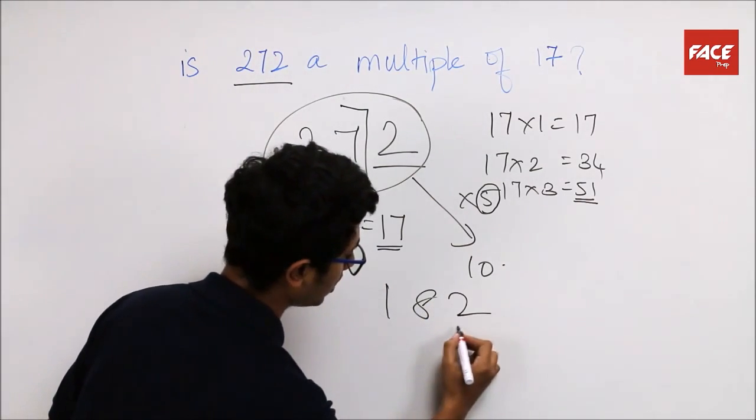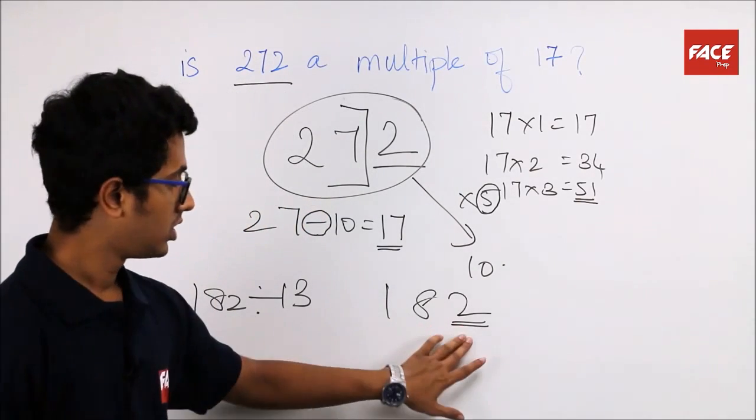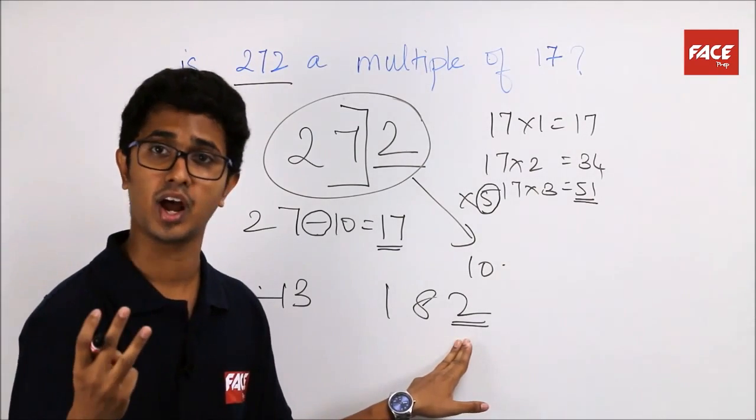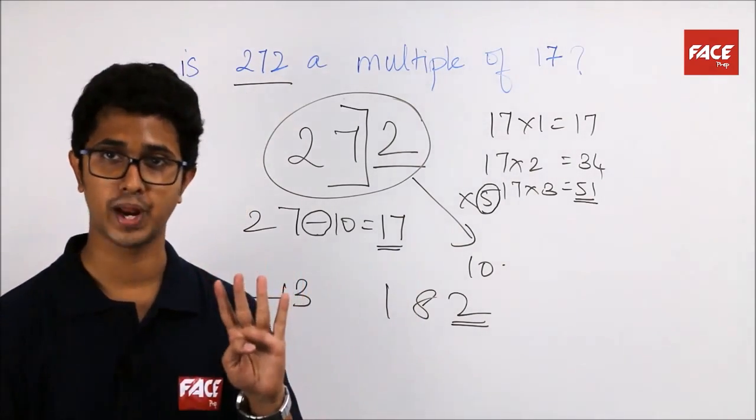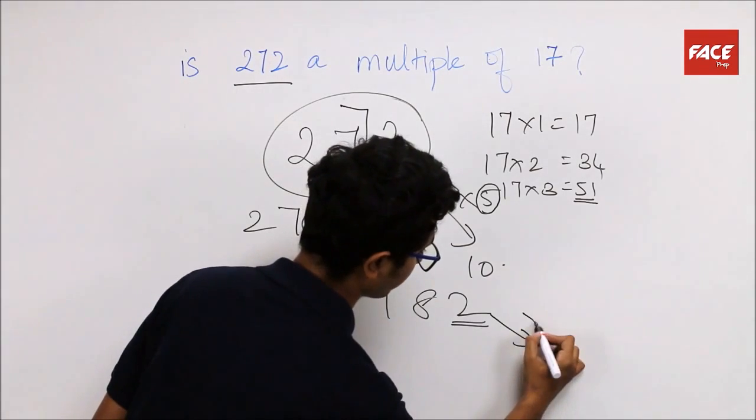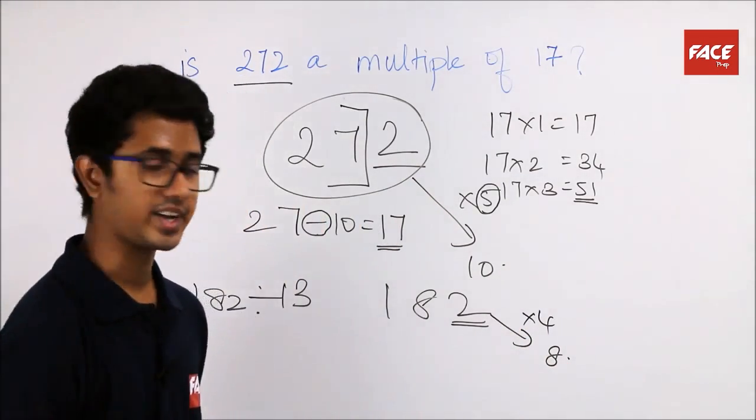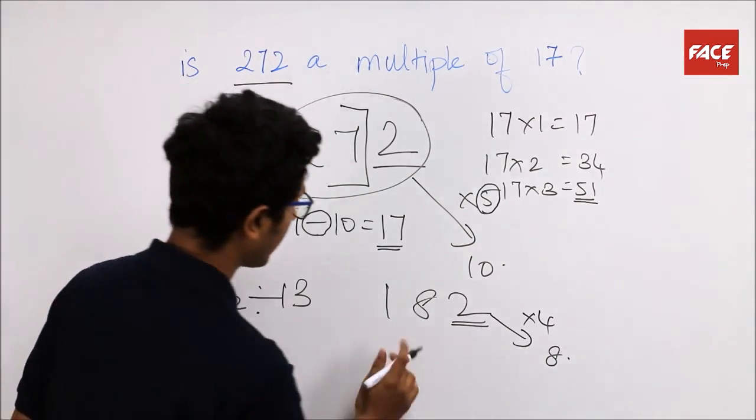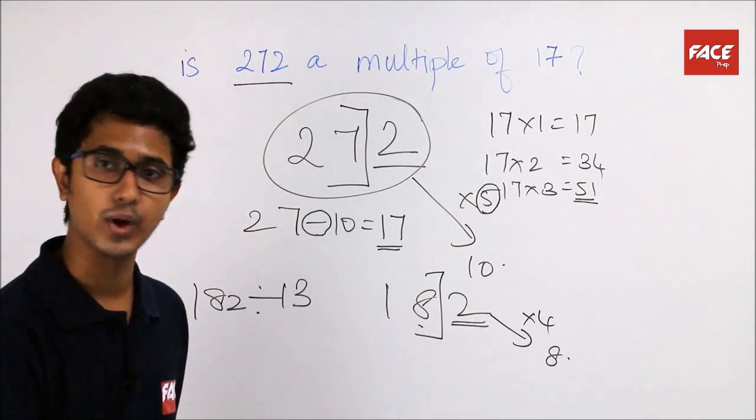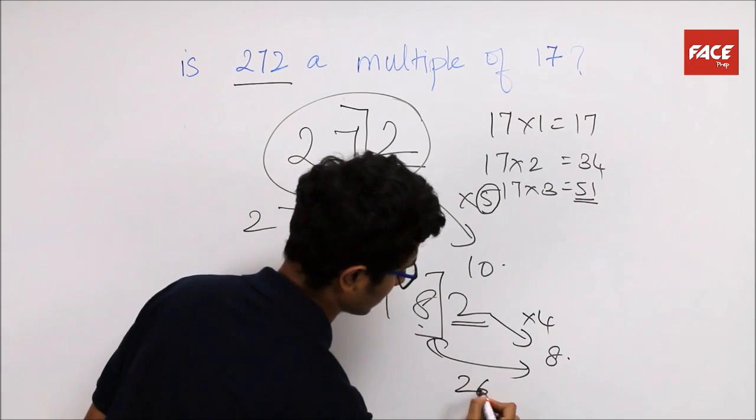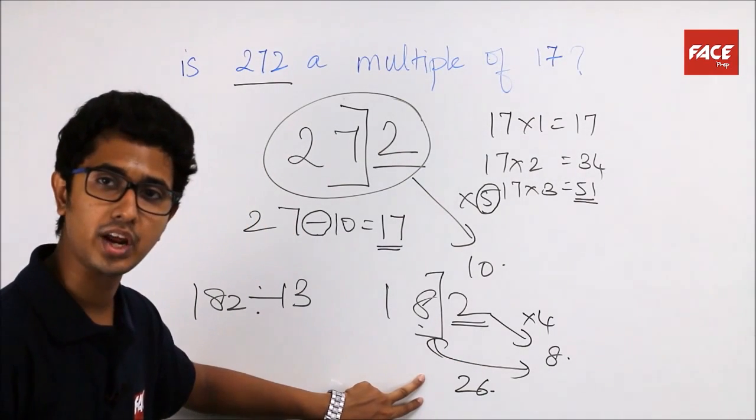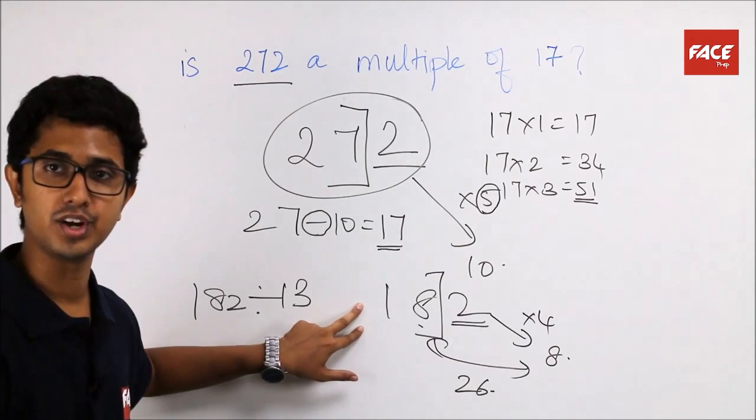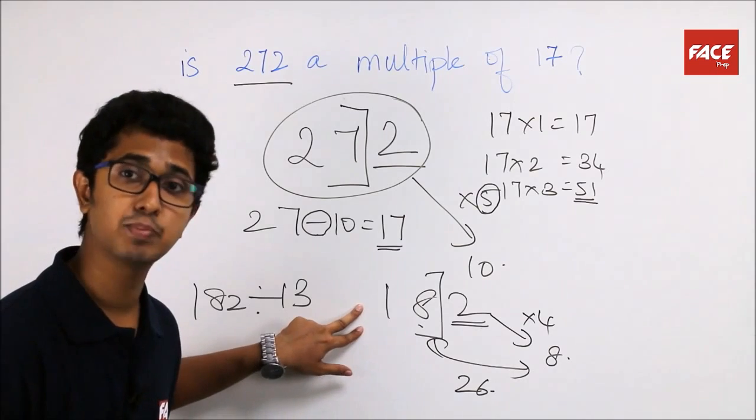Let's take 182 now. Let's take the last number, 2. With what would you multiply? That's the next question that comes to your mind. 13 into 1 is 13. 13 into 2 is 26. 13 into 3 is 39. 39 is closer to the 4th multiple of 10. So, multiply 2 by 4, which will be 8. Now, 39, is it lesser than 40 or greater than 40? It's lesser than 40. So, add the remainder of the digits to 8. 18 plus 8 is 26. Now, is 26 a multiple of 13? Obviously, yes. So, if this number is a multiple of 13, then 182 will also be a multiple of 13.